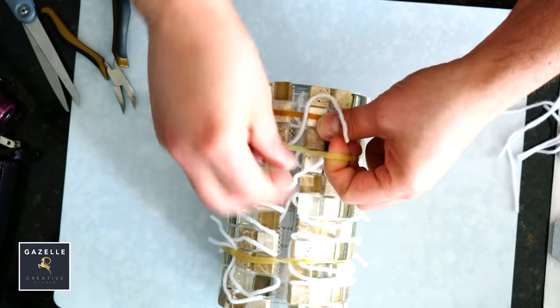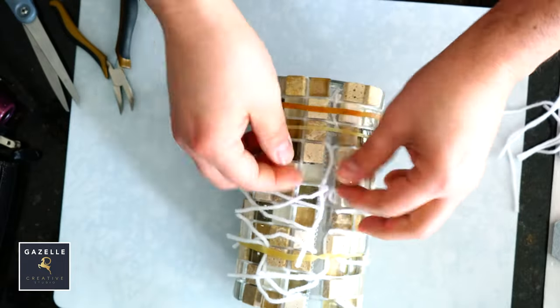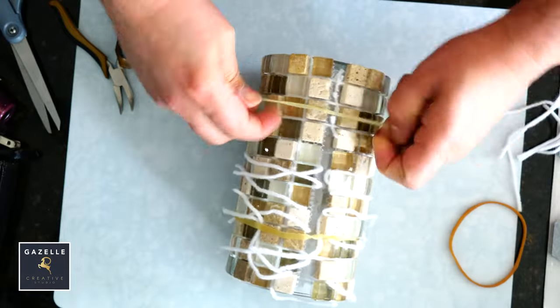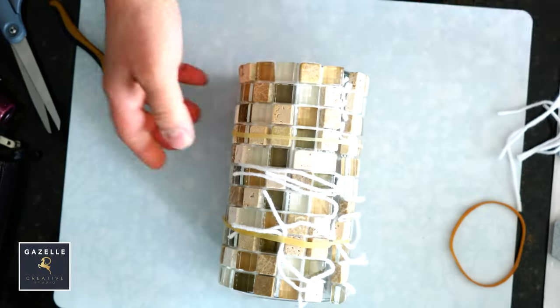You can cover the back of the vase with faux leather or other materials. I will leave it as it is, as it will be placed against a wall and the back won't be visible.